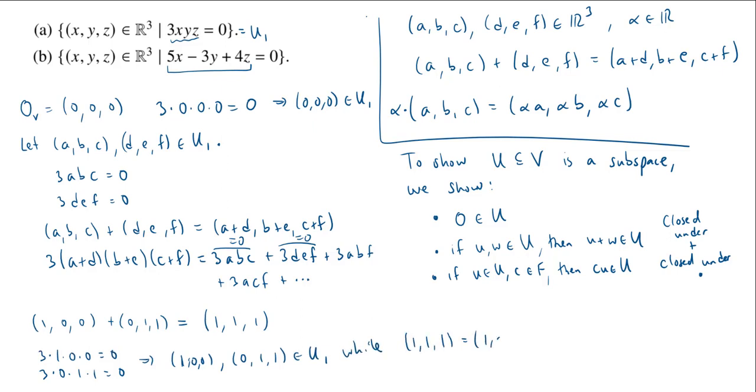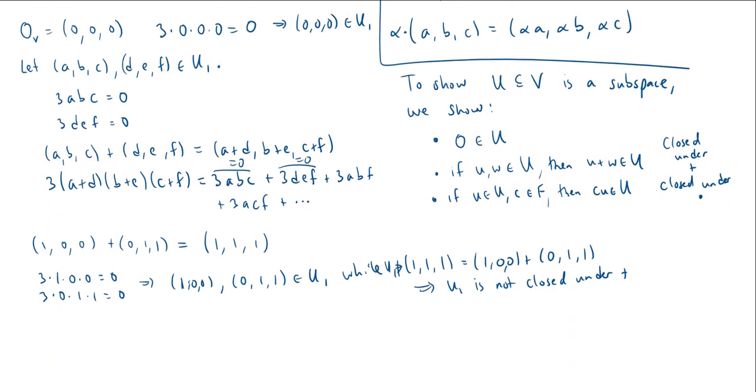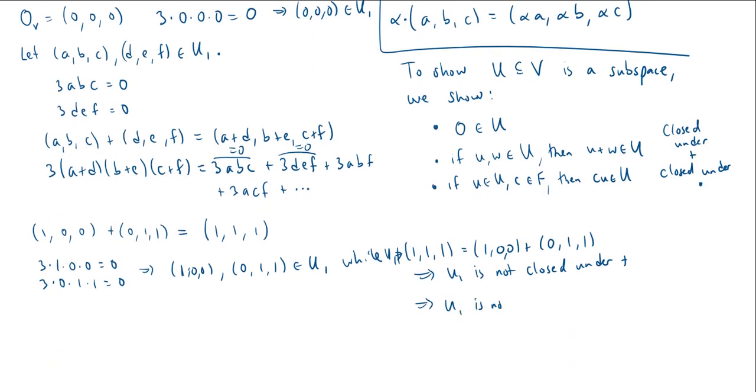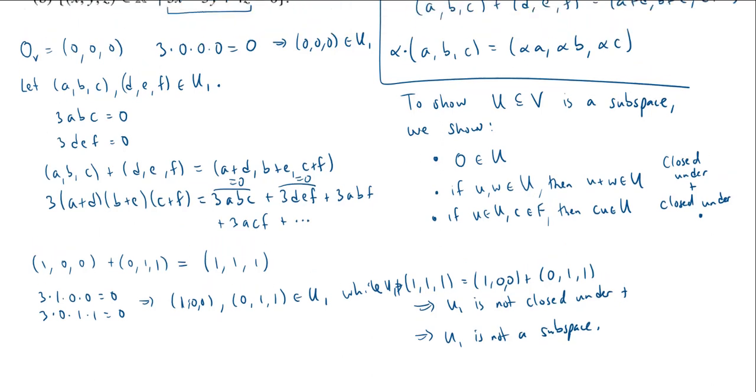Now I know that 3·1·0·0=0 and 3·0·1·1=0, which tells me that (1,0,0) and (0,1,1) are in U₁, while their sum (1,1,1) - that's (1,0,0) + (0,1,1) - is not in U₁. This shows that U₁ is not closed under addition. And therefore, U₁ is not a subspace.